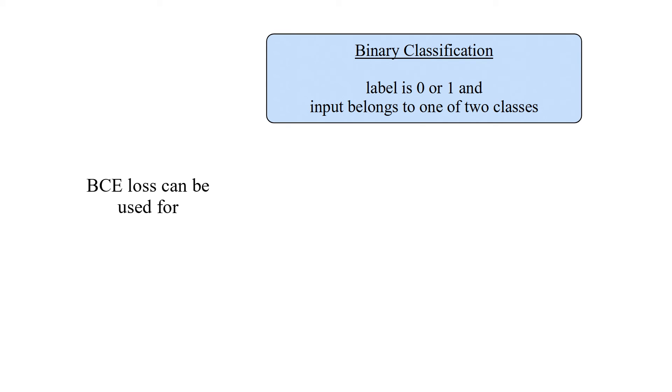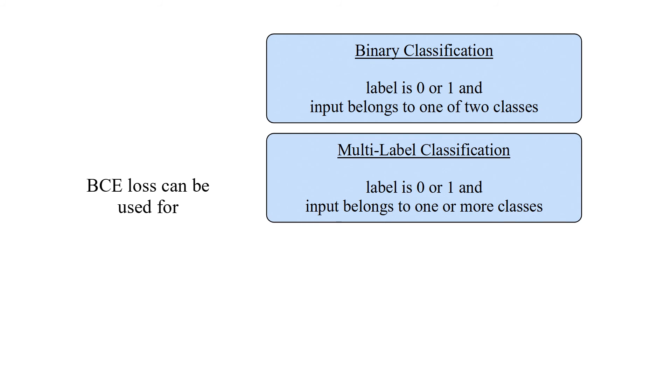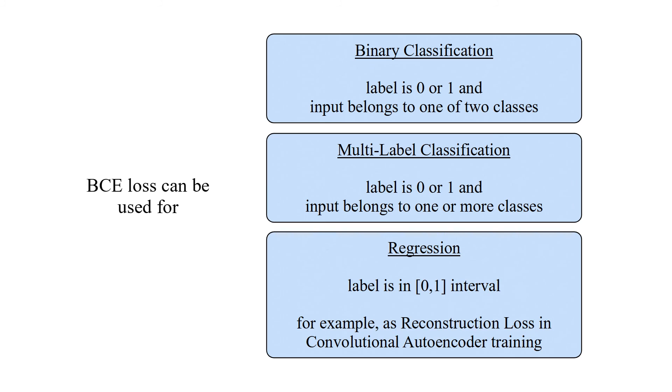Binary cross-entropy loss can be used for binary classification where label is 0 or 1 and input belongs to one of two classes, and regression where label is in 0-1 closed interval, for example, as reconstruction loss in convolutional autoencoder training.